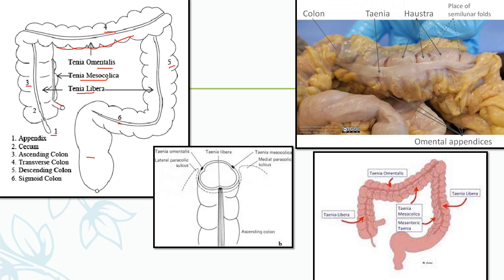You can see how a teniae is formed in this cross-section of the large intestine. There is a thickened band of longitudinal muscle — this is the teniae. Between the teniae, the wall of the large intestine becomes sacculated, and these sacculations are known as haustra. Finally, we have omental appendices, which are fat-filled pockets present in the region of the large intestine.